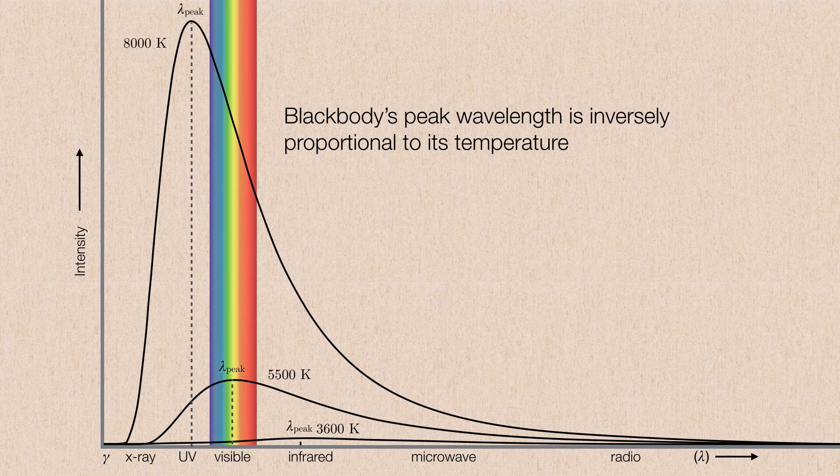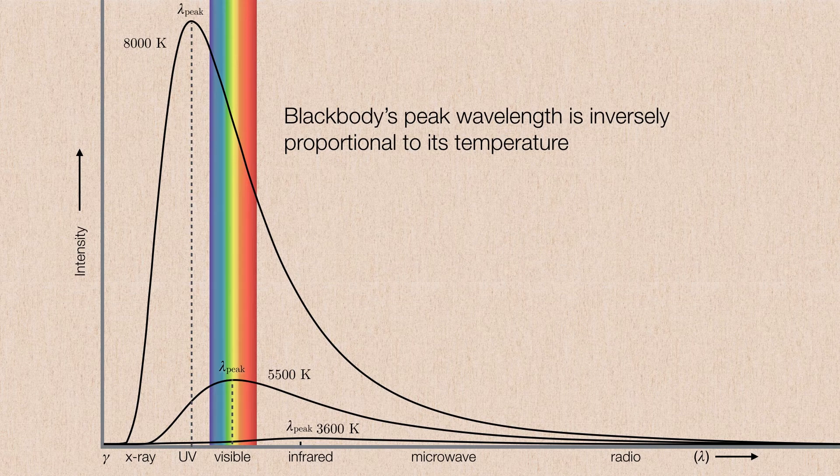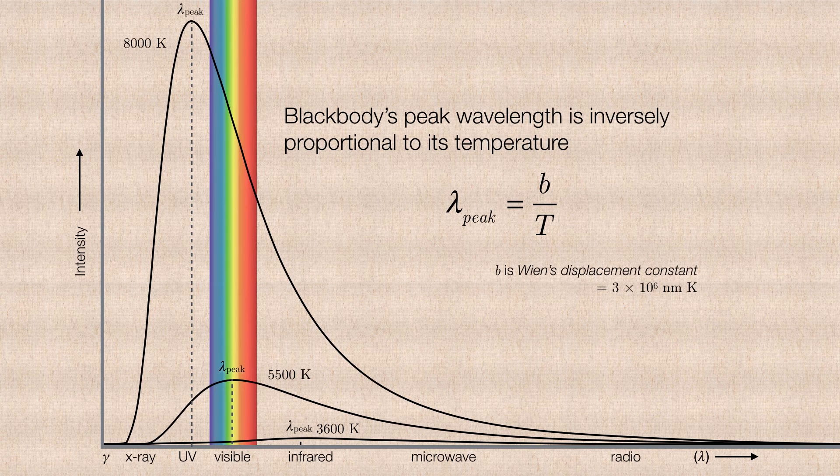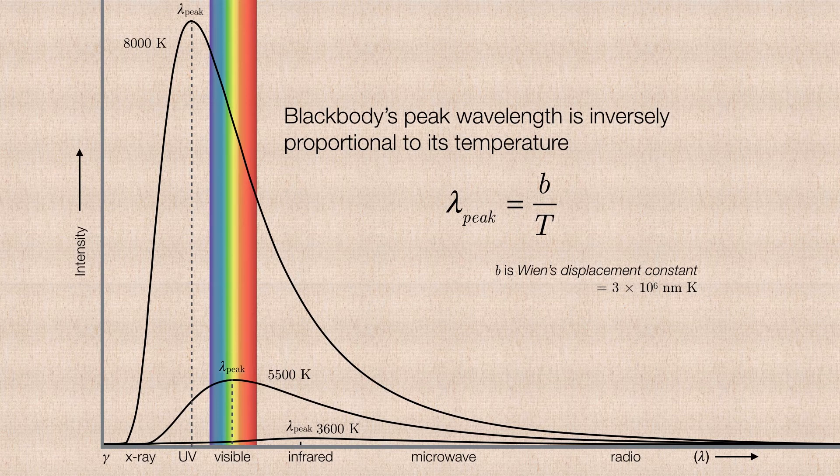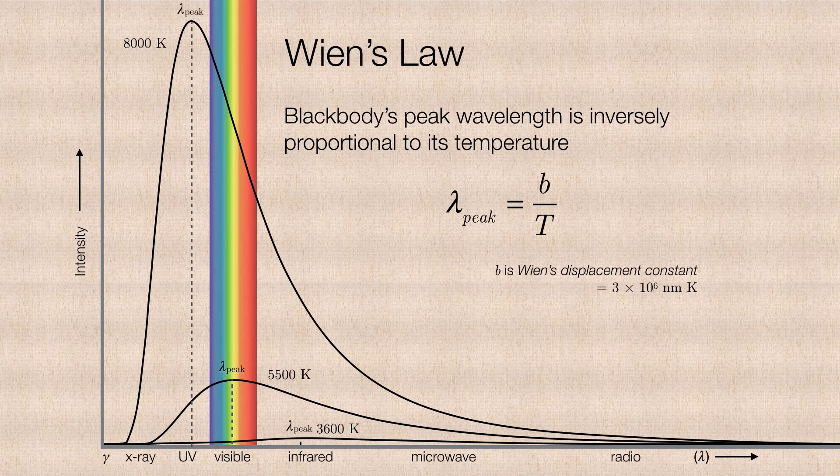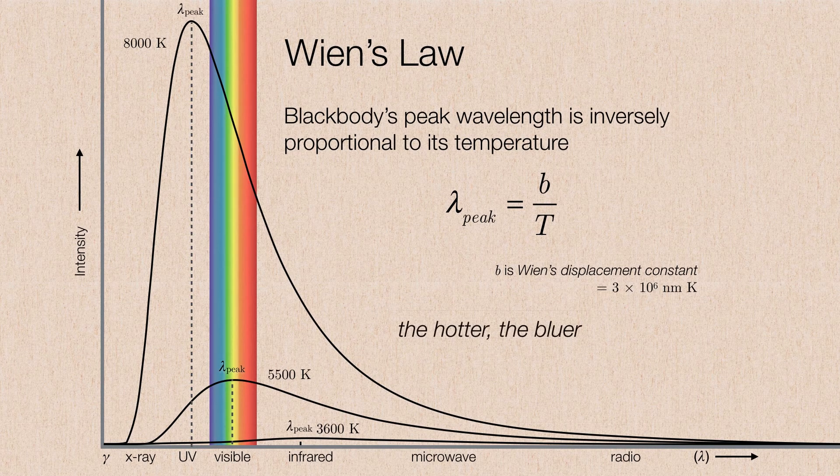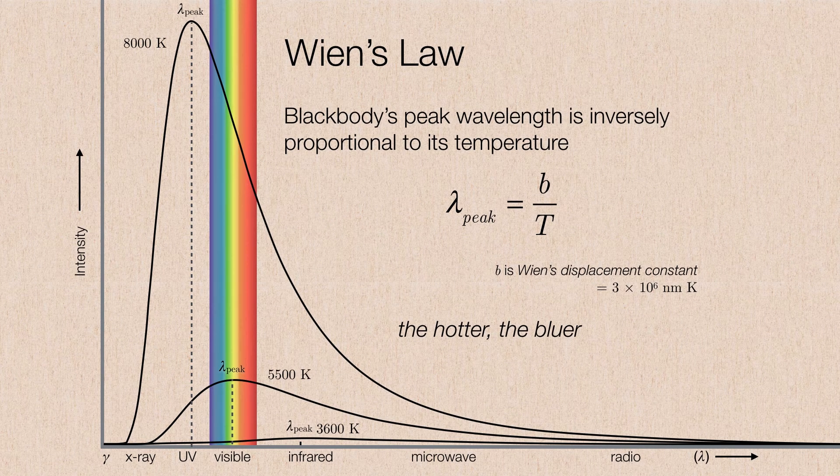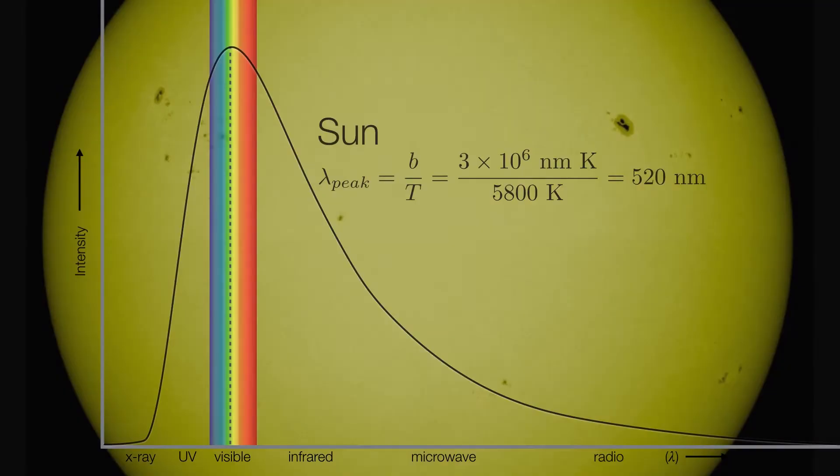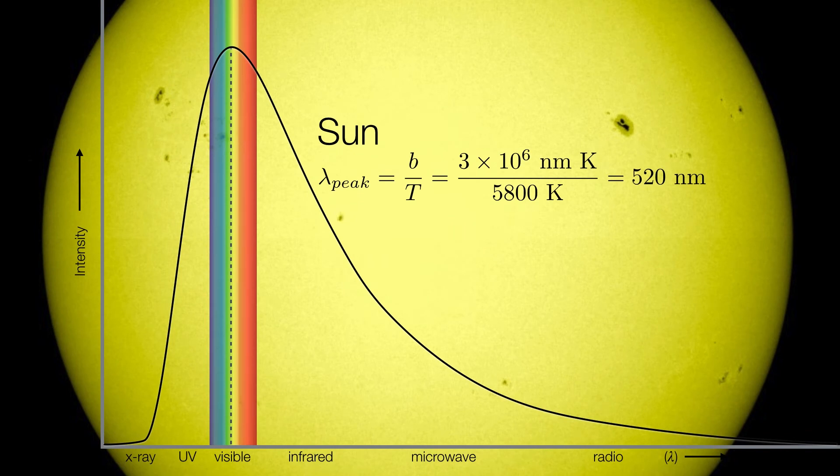We can express this mathematically as the peak wavelength is equal to some constant divided by its temperature. The constant is known as Wien's displacement constant, named after the person who discovered it. It's just some number, but this law is called Wien's law. And in English, we could just say that the hotter an object is, the bluer it will appear.